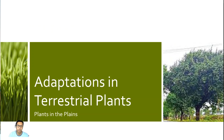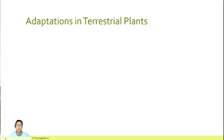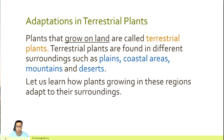Now let's talk about adaptations in terrestrial plants. Plants that grow on land are called terrestrial plants. Terrestrial plants are found in different surroundings such as plains, coastal areas, mountains, and deserts. Let us learn how plants growing in these regions adapt to their surroundings.